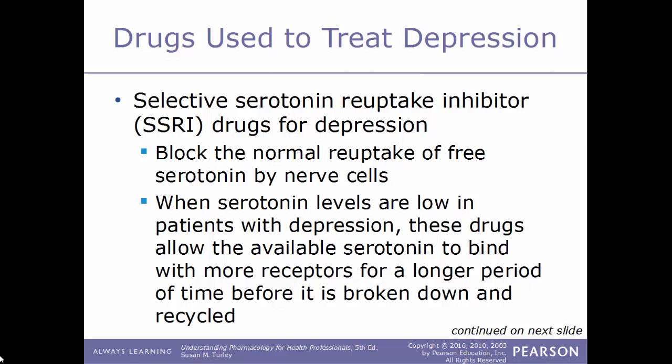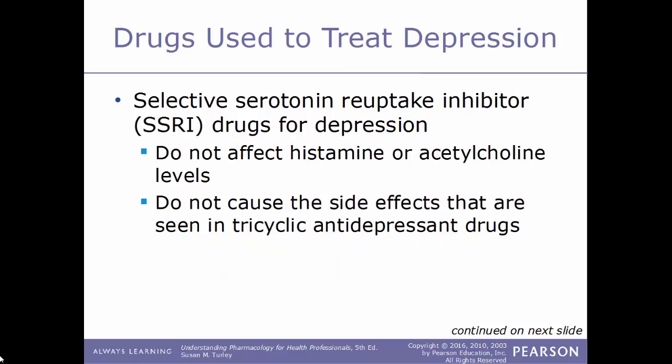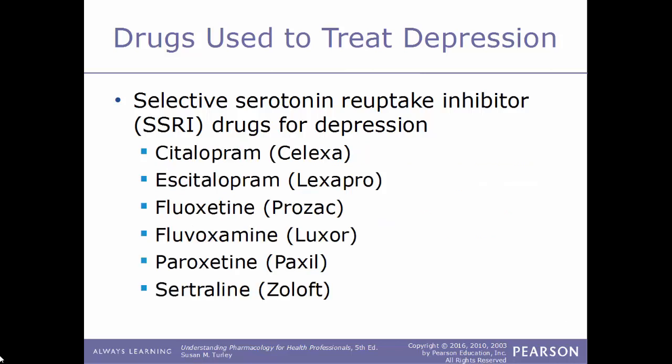SSRIs — selective serotonin reuptake inhibitors — work by blocking the normal reuptake of free serotonin by nerve cells. When serotonin levels are low in depression, these drugs allow the available serotonin to bind with more receptors for a longer period before being broken down. SSRIs do not affect histamine or acetylcholine levels and do not cause the side effects seen with tricyclic antidepressants.